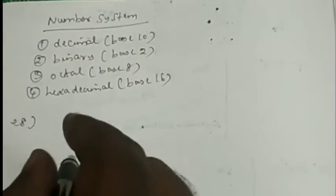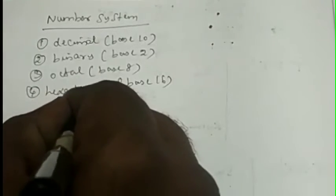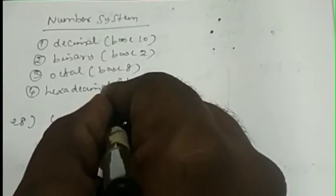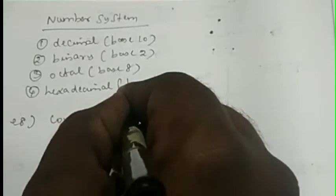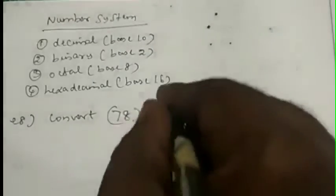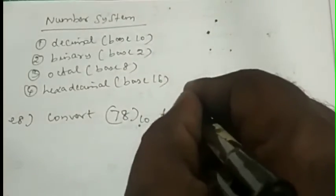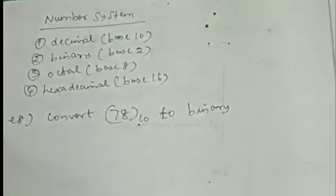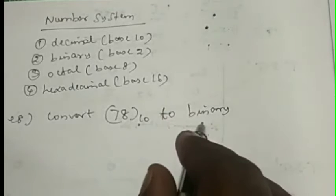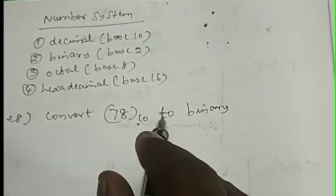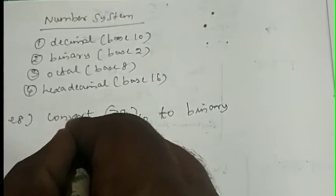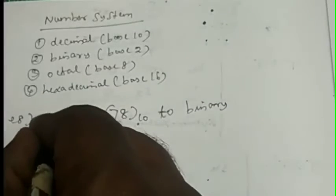For instance, I want to convert a decimal number — decimal 78, where the base is 10 — to a binary number. Since we want to convert to binary, the binary base is 2. To convert this decimal number to binary, I divide 78 by 2.